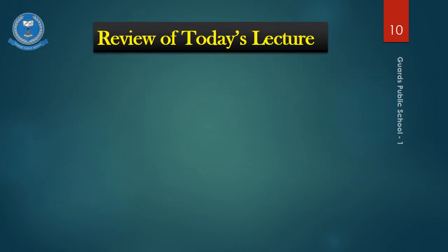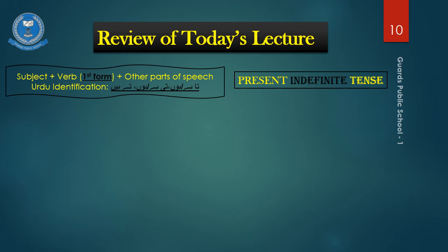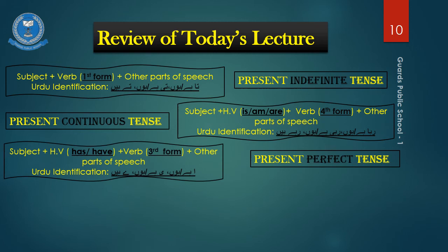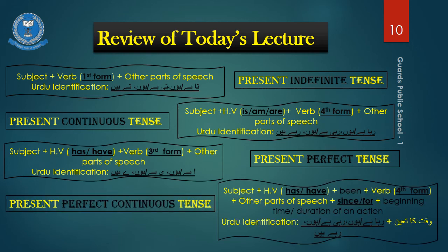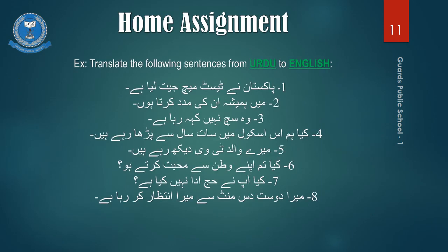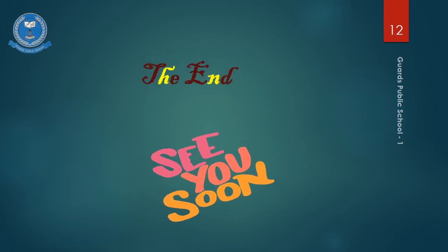So dear students, in this lecture we had a recap of the sentence structures in the four basic kinds of sentences of all the four aspects of the present tense. Besides this, we have also learned about the present tense and its aspects identifications in the Urdu sentences. I hope you have understood all the details well, and now is the time to assess your knowledge. So as you can see on your screen, this is your home assignment. You have to translate the given sentences from Urdu to English. You have to complete this assignment in your registers. Thanks for watching this video lesson. Have a great day.